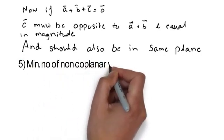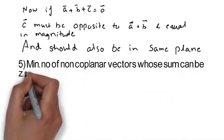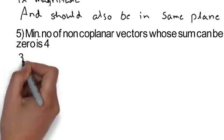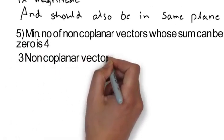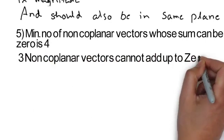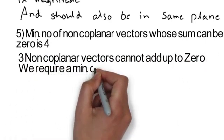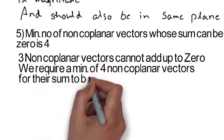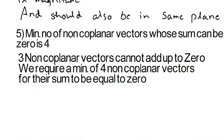Finally, the minimum number of non-coplanar vectors whose sum can be zero is four. Non-coplanar means vectors which are not in the same plane. We have seen that three non-coplanar vectors cannot add up to zero. We require a minimum of four non-coplanar vectors for the sum to be equal to zero.